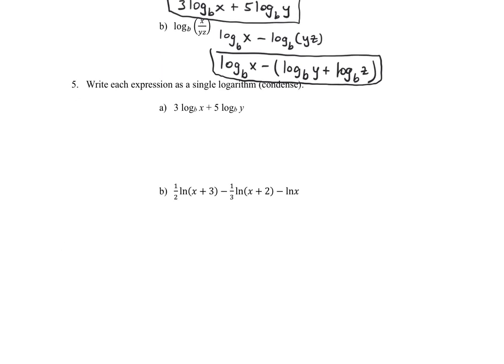Question 5 involves condensing into a single logarithm. The coefficients came from exponents, so we move them back up as exponents: log base b of x cubed plus log base b of y to the fifth. The plus sign means we use the product rule, so the terms inside each logarithm multiply: the result is log base b of (x cubed times y to the fifth).